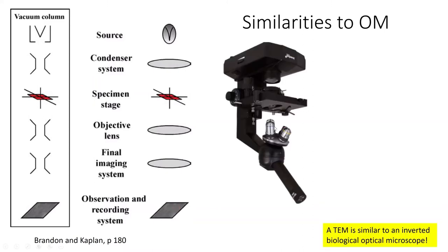Through some creative editing, I've added in the biological microscope for comparison — it's inverted. We have our light source, a condenser for the light, where our specimen is, our objective lens, and the final imaging and recording system. A camera goes right here. So a TEM is similar to an inverted biological optical microscope. There are TEMs that illuminate going the other way, but most follow this inverted design.